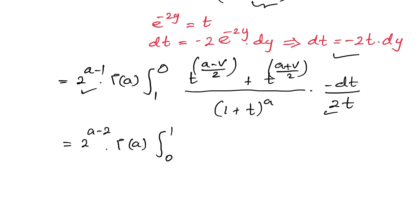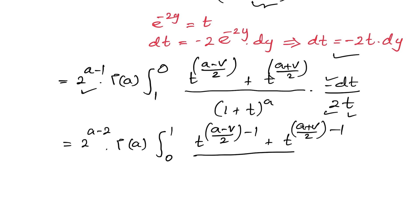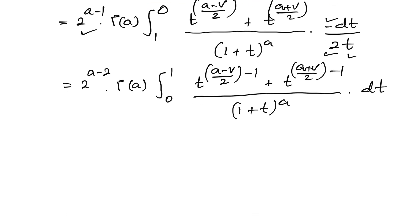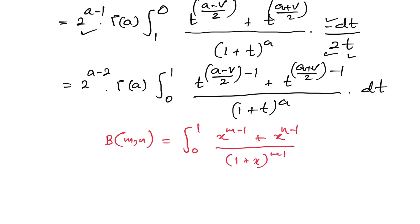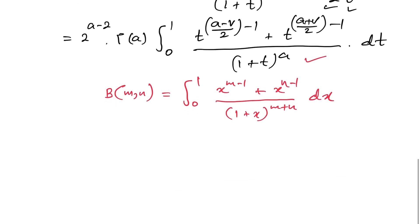Recalling the Beta function formula: β(m, n) = ∫₀¹ (x^(m-1) + x^(n-1)) / (1+x)^(m+n) dx, our integral matches exactly this form. We can therefore convert it directly to the Beta function.